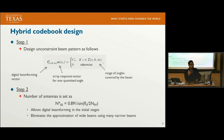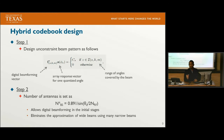We also perform hybrid codebook design, which consists of three basic steps. In the first step, we design the digital beamforming vector such that its multiplication with the array response vector results in a constant gain over the desired sector and zero otherwise. It is shown in the paper that this can be performed with a simple least squares equation.